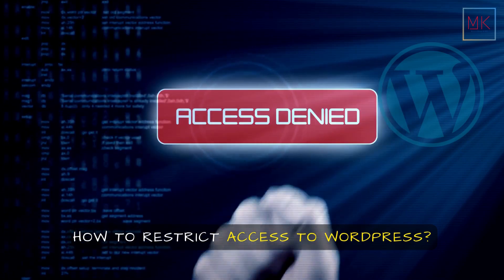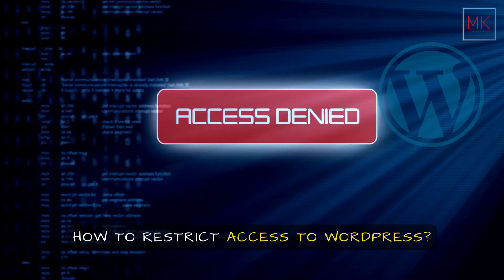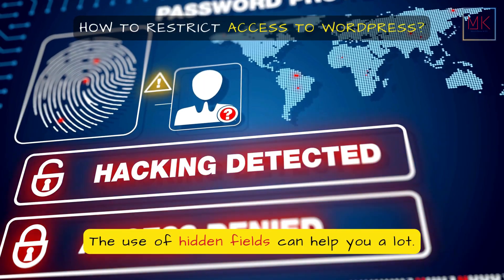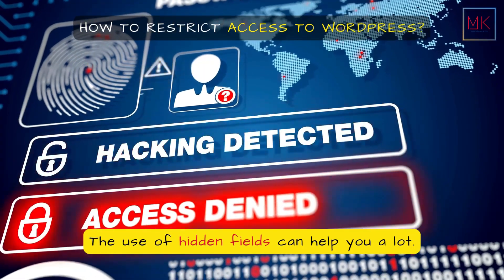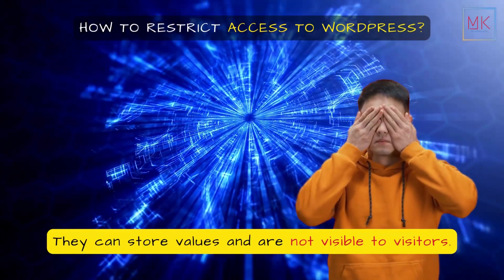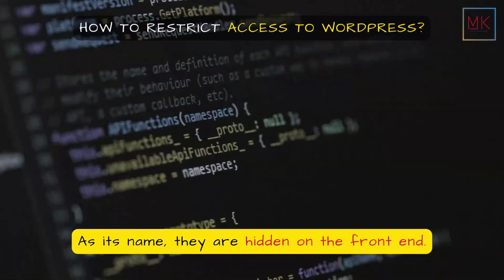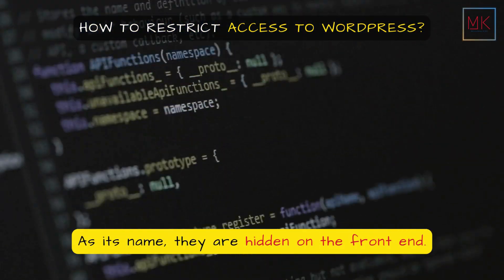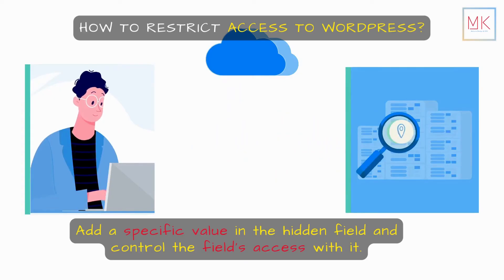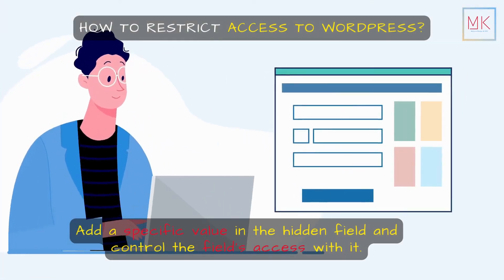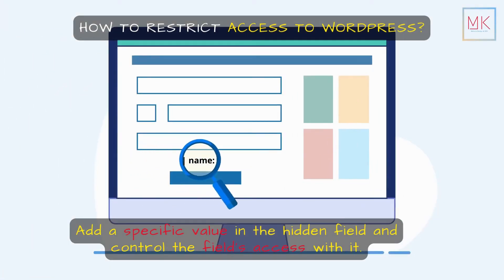How to restrict access to WordPress. First, add hidden fields to your website. The use of hidden fields can help you a lot — they can store values and are not visible to visitors. As their name suggests, they are hidden on the front end. Add a specific value in the hidden field and control the field's access with it.